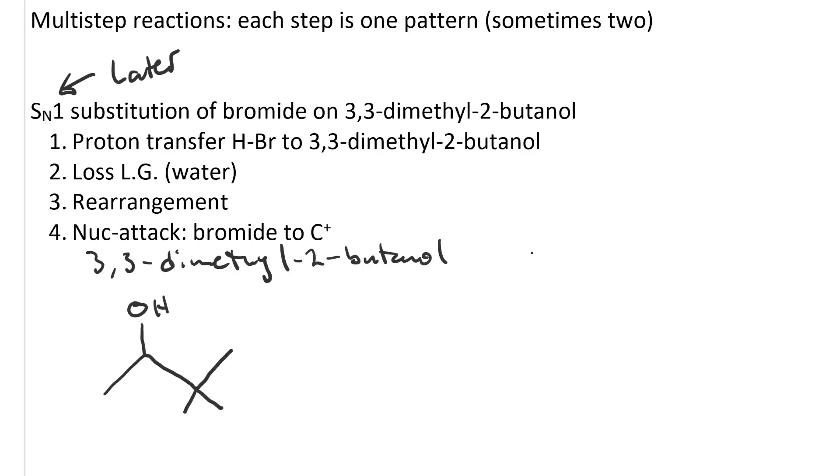Here is our starting material, 3,3-dimethyl-2-butanol. Let's draw in the lone pairs on the oxygen. Now the hydroxyl group is a terrible leaving group, but if we do proton transfer, say from hydrobromic acid, we can make a protonated alcohol with the water as a good leaving group.